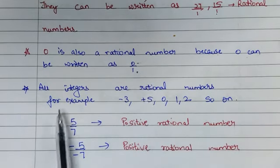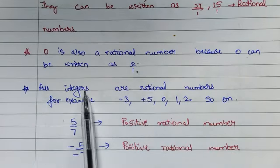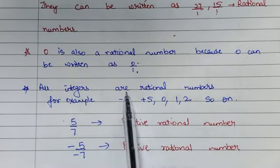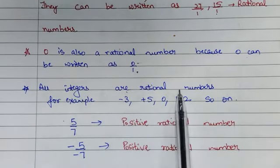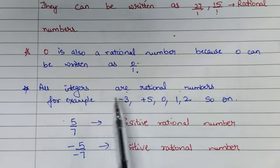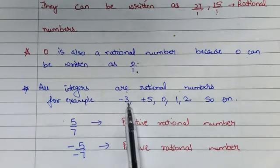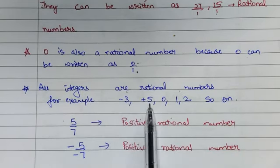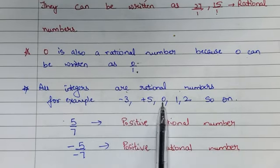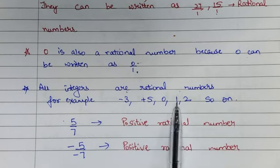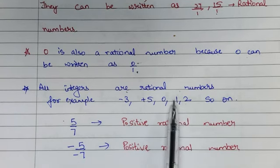All the integers are also rational numbers. For example, minus 3, plus 5, 0, 1, 2 — there are so many integers.